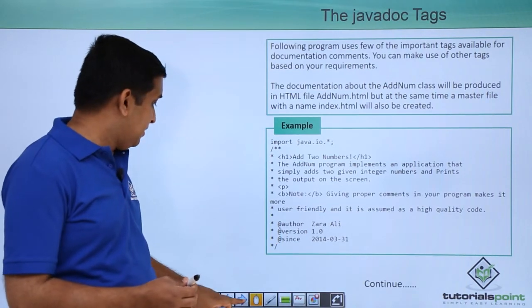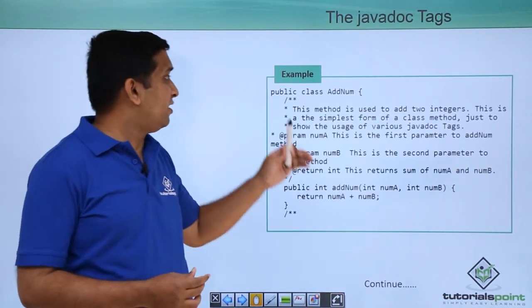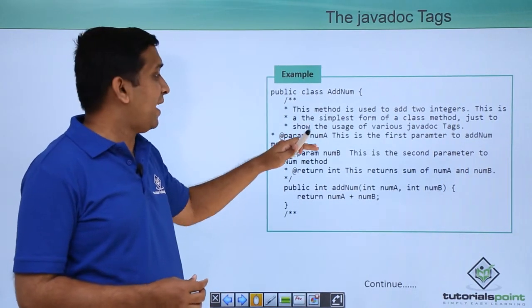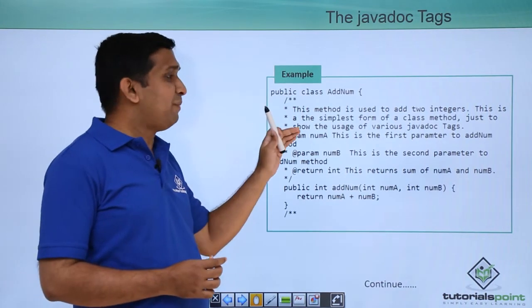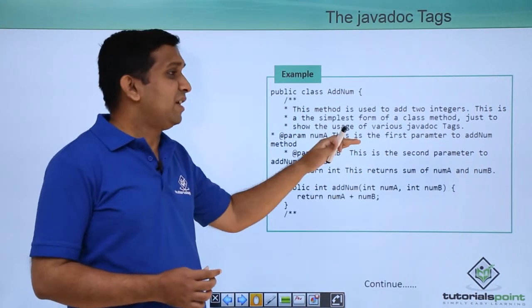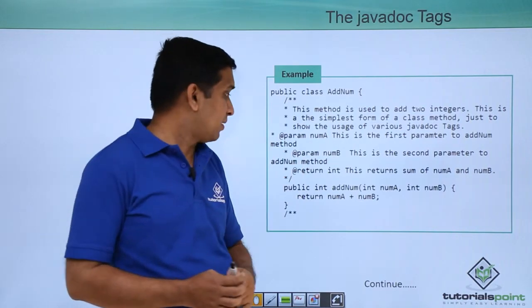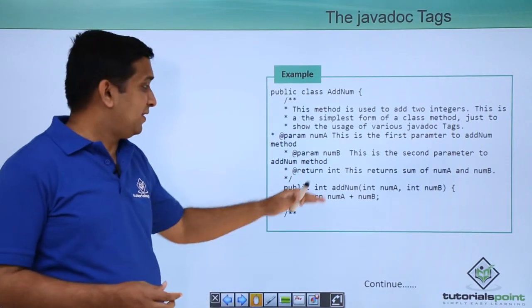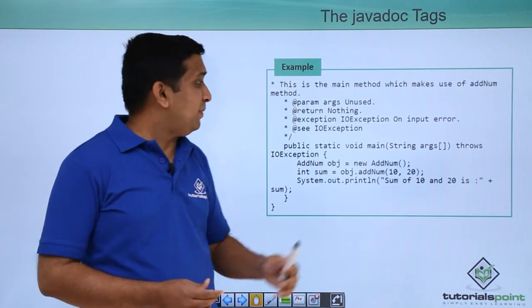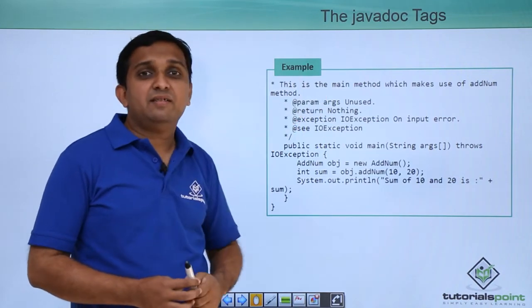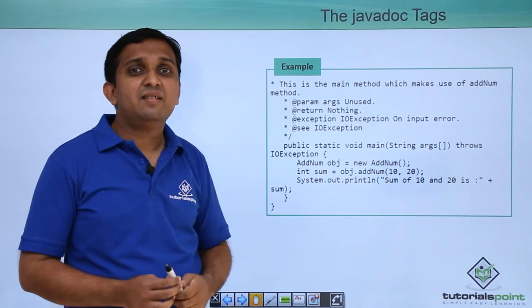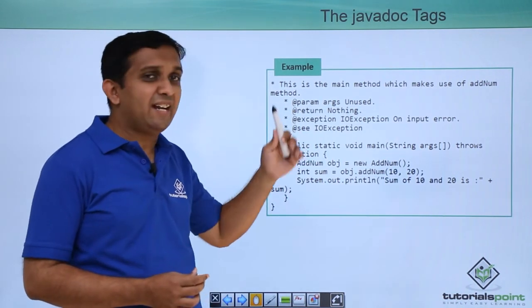On to the next slide. Class is written which is AddNum class. Here the tags used are @param, @param. Now after this @param tags the description is given. So that description will get added to the javadoc. After that AddNum method is implemented then again main method is in next session. In main method I am creating the object and I am calling the method of that particular AddNum class.